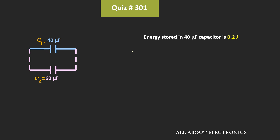So as you are aware, the energy stored across the capacitor can be given as E = ½CV², where V is the voltage across the capacitor. From this, we can also express it as E = Q²/2C.